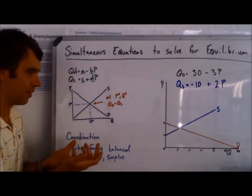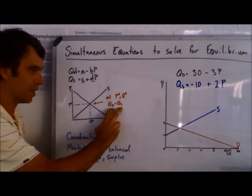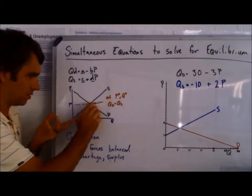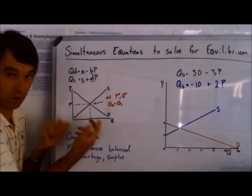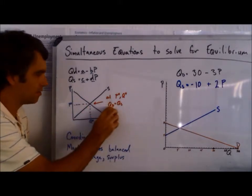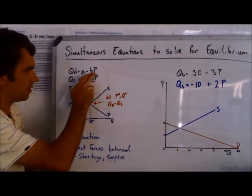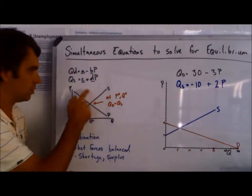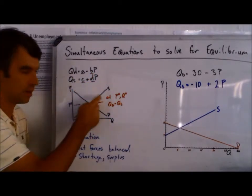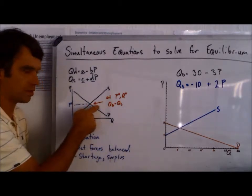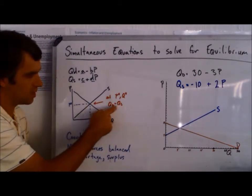What's significant about that is mathematically we can say that at this point, at p star and q star or equilibrium, this formula, a minus bp, is equal to c plus dp. Not anywhere else, but just in this one spot. So once we do this, now we have a way to solve for what's going on there at equilibrium.